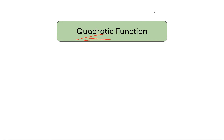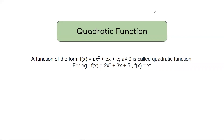Now, what is a quadratic function? A function of the form f(x) equals ax squared plus bx plus c, where a does not equal to 0, is called a quadratic function. The equation is a function f(x) equals ax squared plus bx plus c.